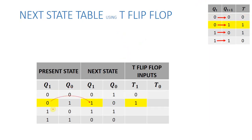1, 0 will be the next state. What should we give as input T1? We should put 1 here. Present state 1, 0; next state 1, 1. What should we give for T0?